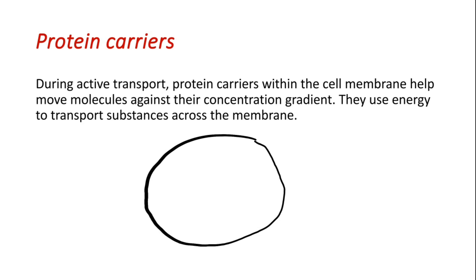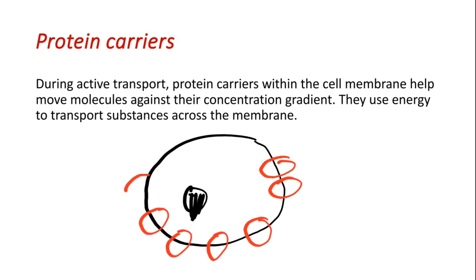Let's look at a diagram. This represents our cell with a cell membrane, and inside we have the nucleus. Within the cell membrane we have protein carriers — these are the ones playing a role in active transport. For these protein carriers to move ions from the outside region to the inside region, energy is required. The protein carriers use energy to transport substances across the cell membrane.